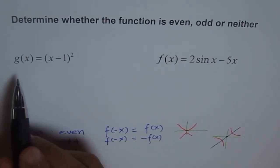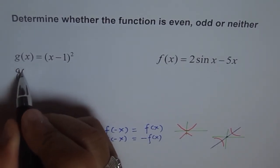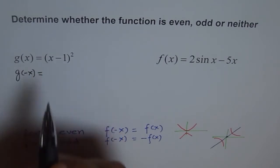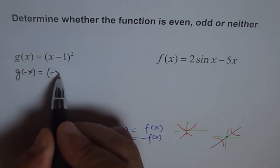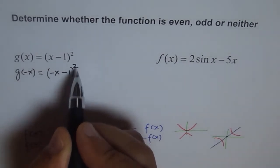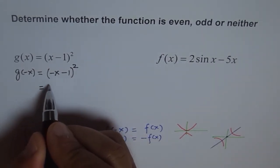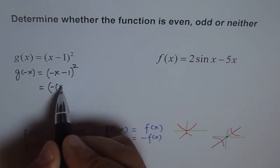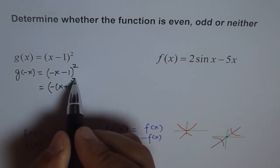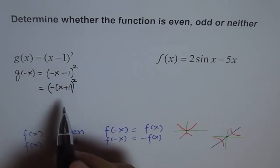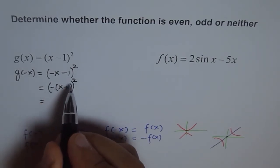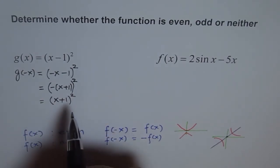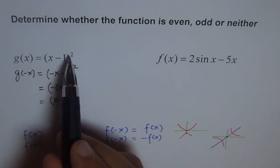So the first problem is g(x). The first step is to find what g of minus x is. g of minus x means you replace all x with minus x. So I get minus x minus 1, whole square. I can rewrite this as minus of (x plus 1), whole square. Since the square of a negative quantity is positive, I get x plus 1, whole square.